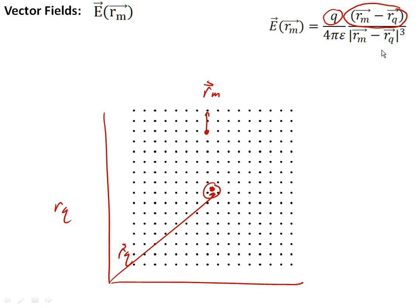What this essentially does is it creates what's called a vector field. At every point in space, every value of R sub M that we can possibly map to, there's an electric field.